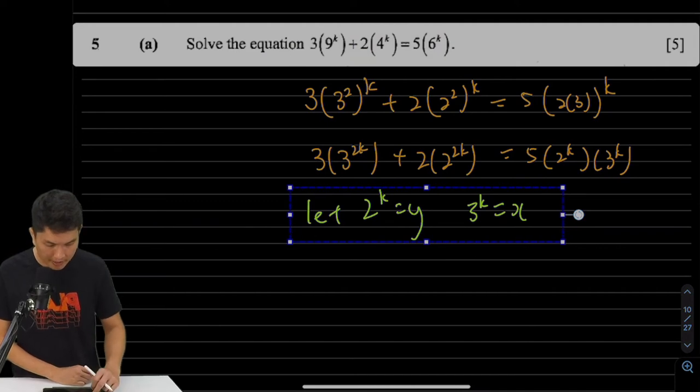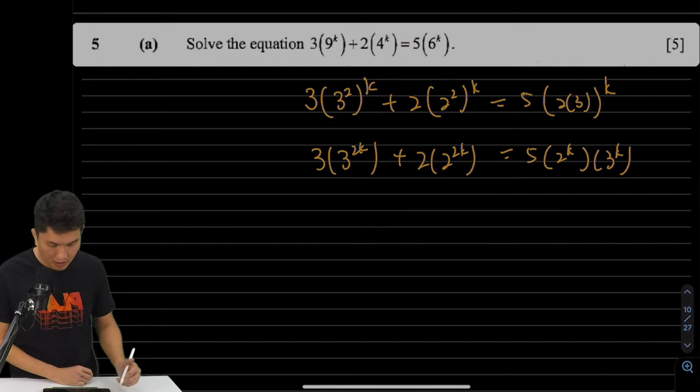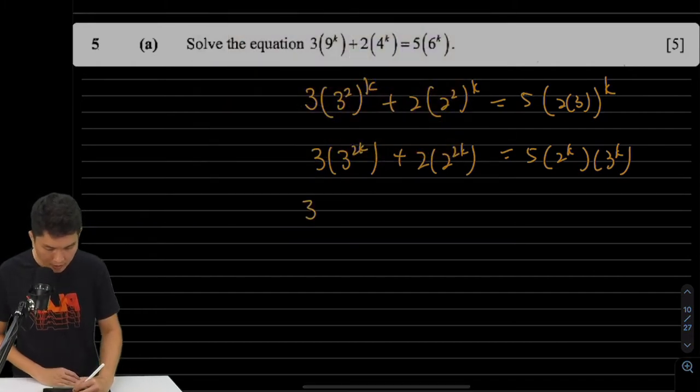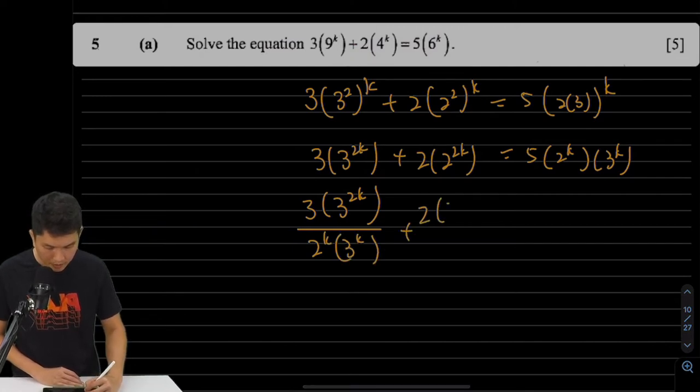Well, the solution is to combine them. I'm going to divide throughout by 2 to the power of k and 3 to the power of k. So if I divide throughout, I'm going to get 3 times 3 to the 2k, divide it by 2 to the k, 3 to the k. Carrying on with the next term, it's the same thing. 2 to the k, 3 to the k. And this is just a 5.